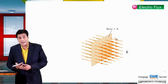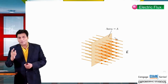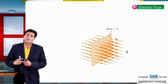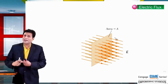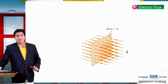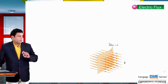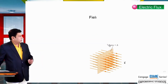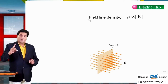The number of lines per unit area we call this term the electric field line density. We know this electric field line density is proportional to the magnitude of electric field. So here we can write rho is proportional to E, where rho is the electric field line density.